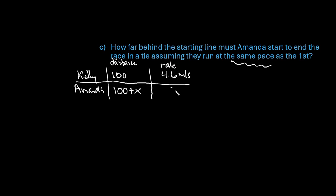We could set this up as a proportion where we're looking at our two times, so we're trying to figure out where time 1 equals time 2. Remember that time is just the distance divided by the rate. So if I take Kelly's distance, and I'm going to put the x on this side, so I'm going to put Amanda first. If I do 100 plus x divided by 5, when does that equal 100 divided by 4.6?